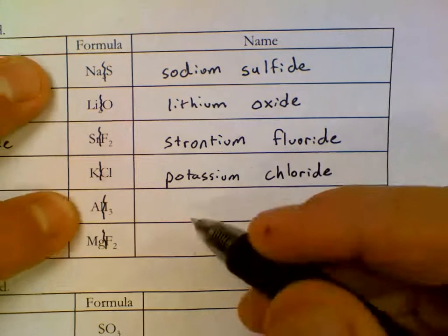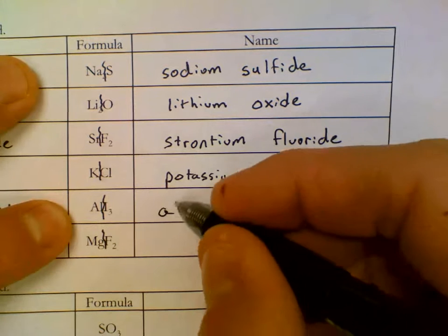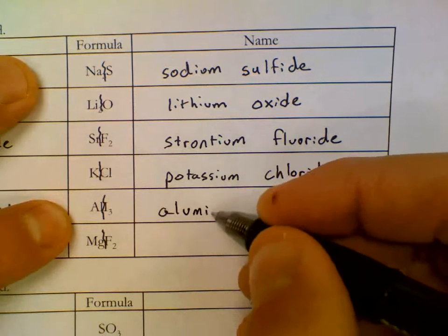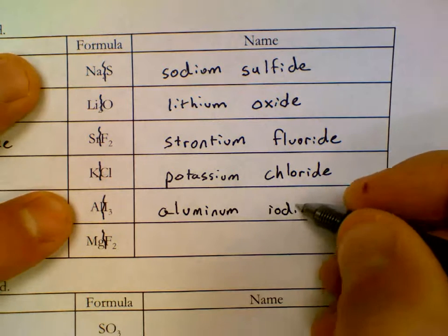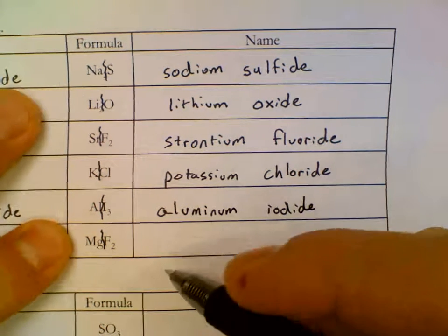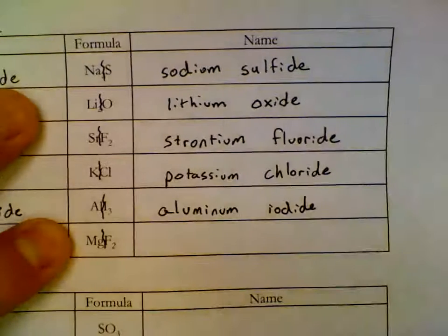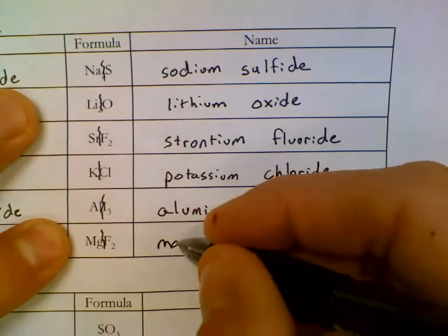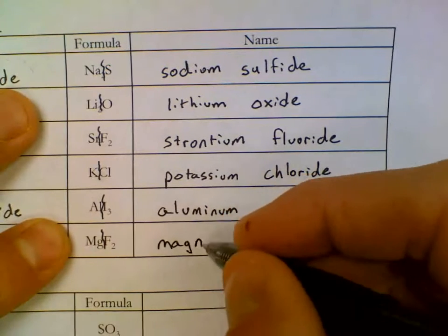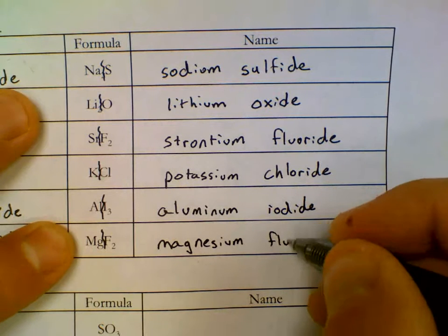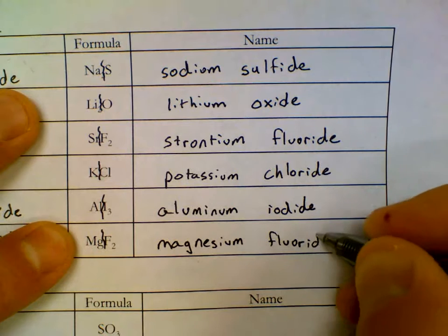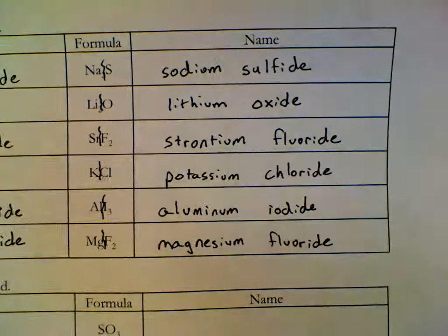Left-hand side of the formula are metals, just like on the periodic table. Aluminum, full first name. I is iodide. Mg is magnesium. F is fluoride. That's the top half. Those are all metals stuck to non-metals.